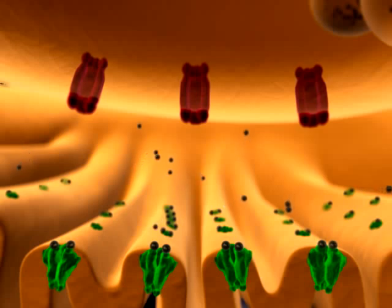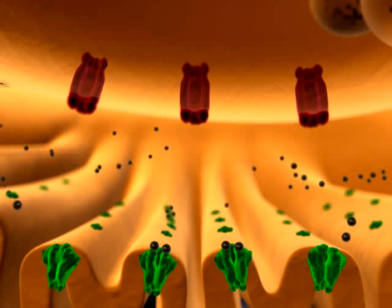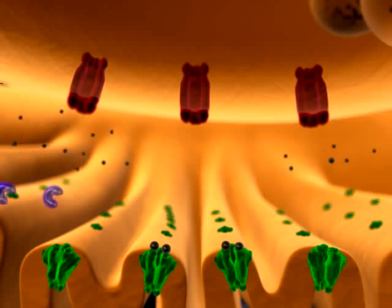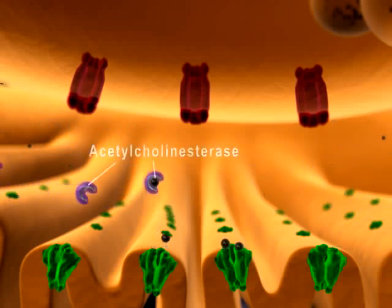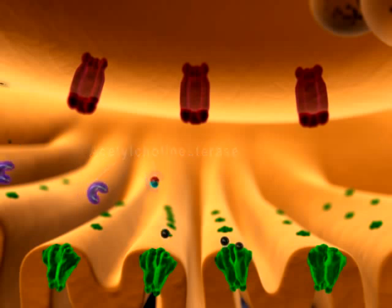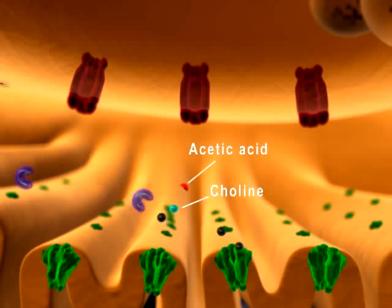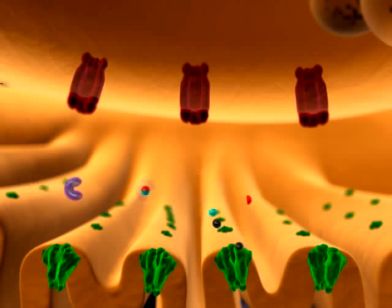1. Acetylcholine diffuses away from the synapse. 2. Acetylcholine is broken down by the enzyme acetylcholinesterase to acetic acid and choline. Choline is then transported into the axon terminal for the resynthesis of acetylcholine.